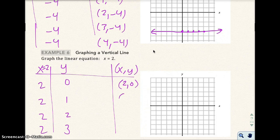(2, 0), (2, 1), (2, 2), (2, 3). So (2, 0) would be right here, (2, 1) would be right there, (2, 2) would be right there, (2, 3) would be right there. And you're going to notice that I have a vertical line.